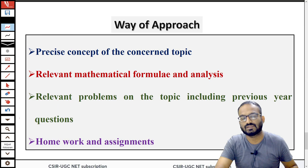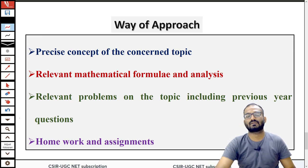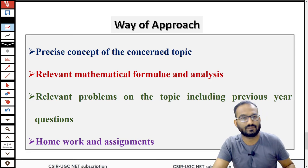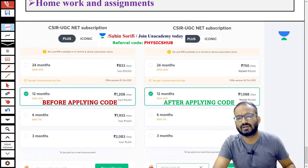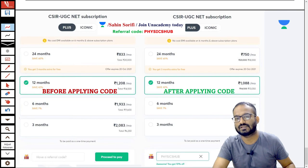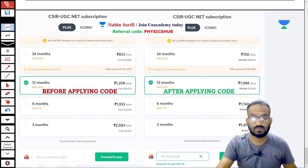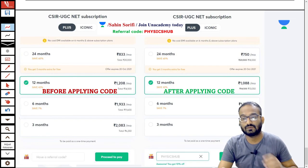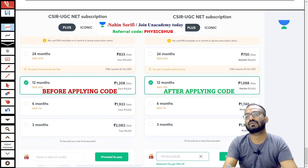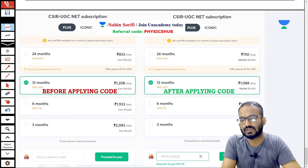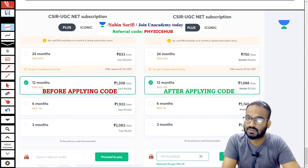And guys, you can join Unacademy using the referral code PHYSICSHUB. My approach is I precisely give you the concept of each topic. Then I discuss the relevant mathematical problem or do the analysis, relevant problems based on the topic including previous questions are discussed. Homework and assignments are also given. This kind of live lectures are available on Unacademy. You can plan for any of the three months, six months, 12 months, 24 months. And if you apply our referral code PHYSICSHUB, you will get 10% off on your whole fees. So take Unacademy Plus subscription and keep your feet one step ahead towards reaching your goal.